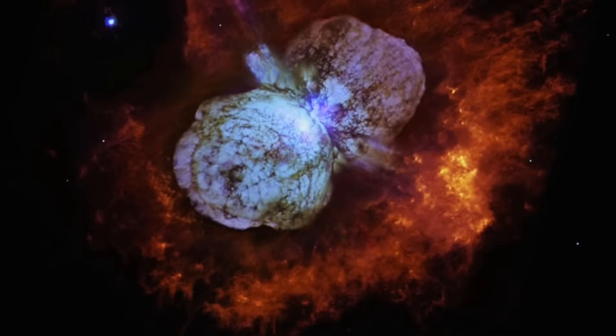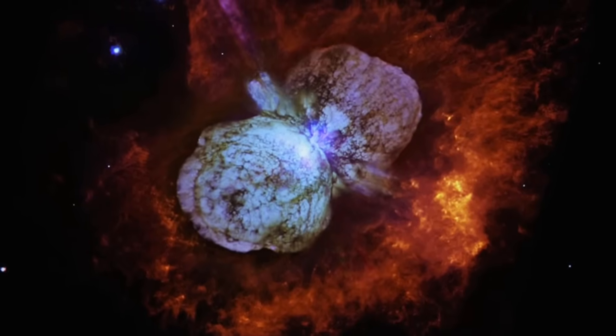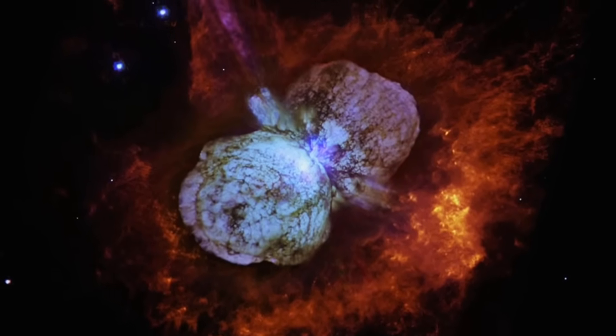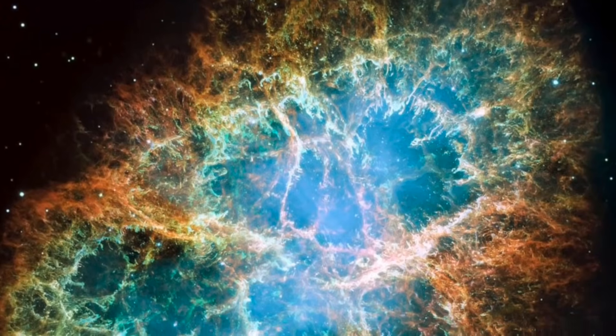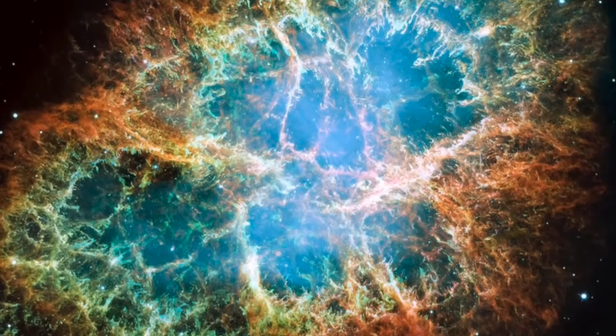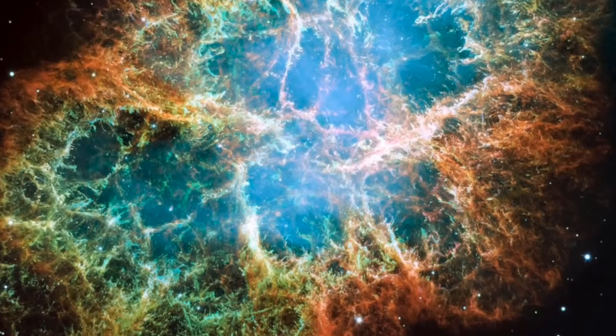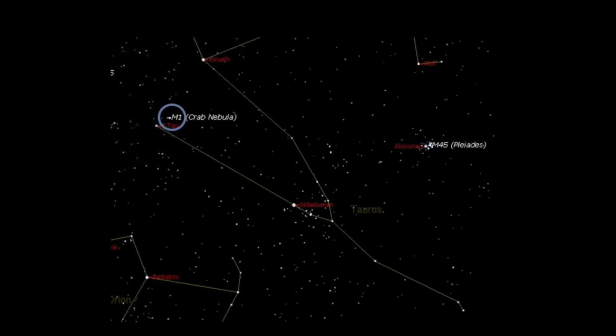Extreme versions of supernova explosions are sometimes referred to as hypernovae, and these produce gamma ray bursts. The most famous supernova in history was in July 1054. Records of this still survive from China all the way to North America. Seen today, roughly a thousand years later, its remnant is called the Crab Nebula, and it is one of the most interesting objects in the night sky. It can be found with a good pair of binoculars or a small telescope in the constellation of Taurus.